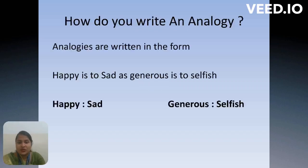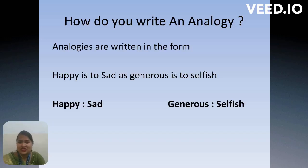Now, how do you write an analogy in sentences? Analogies are written in this form: 'Happy is to sad as generous is to selfish.' So happy is related to sad, and the word generous is related to selfish. This is how you write analogies of words.